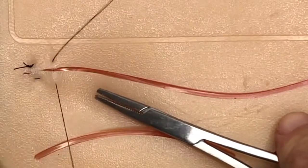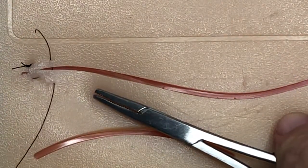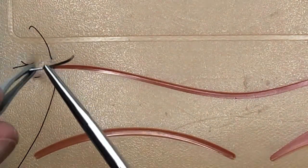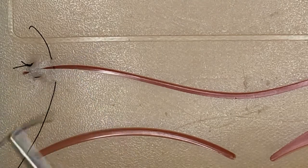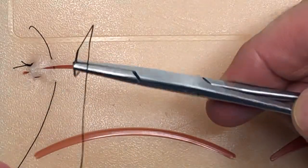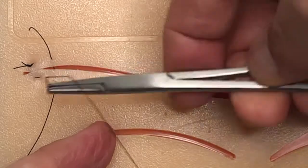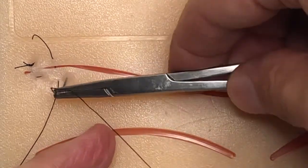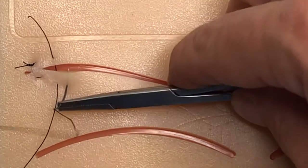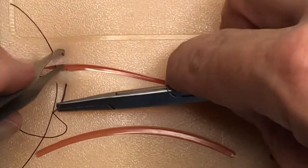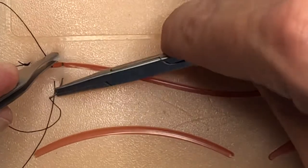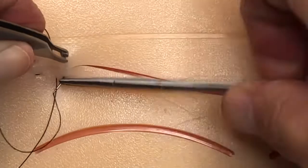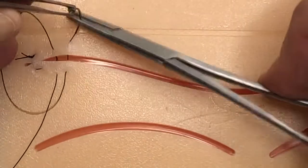I'm going to reload the needle in the needle driver and we're going to come back through at a 90 degree angle. If you need to, use your tissue forceps on the other side. There you go. Grasp the needle, pull it through.